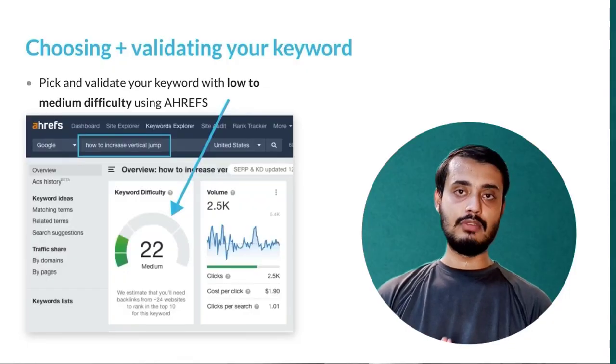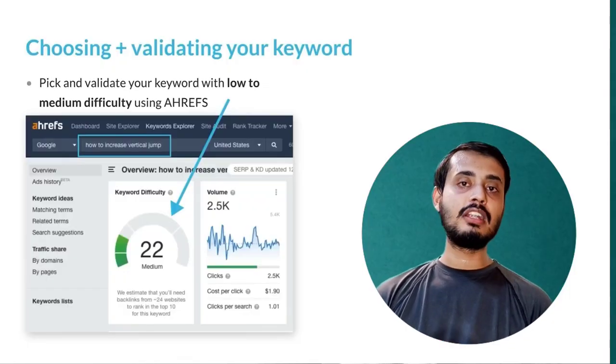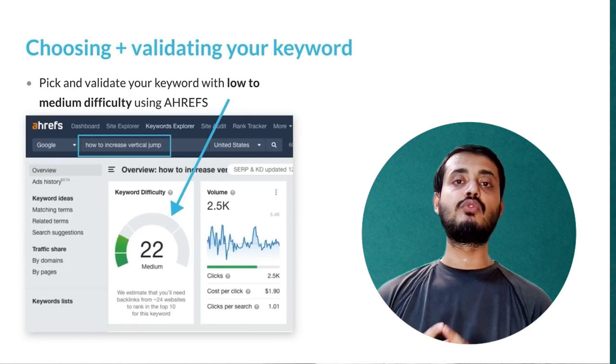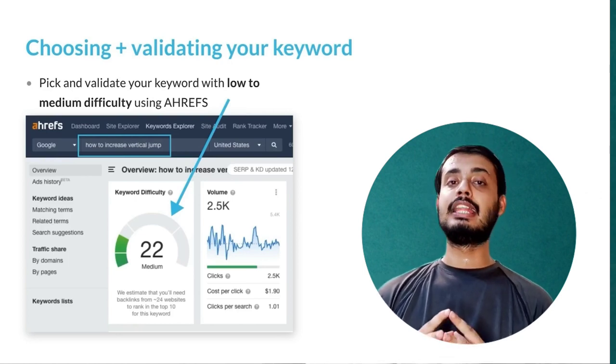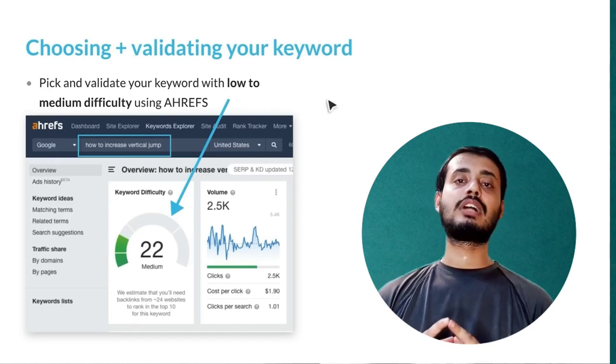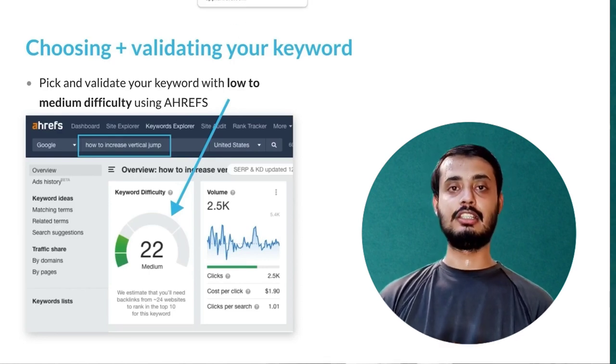We have to think about all of these when creating blog posts in 2023. First we choose and validate our keyword. We look for medium to low difficulty, and we want to compare informational versus transactional searches.